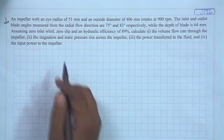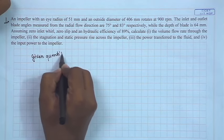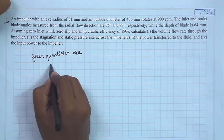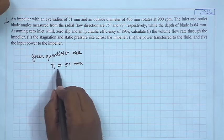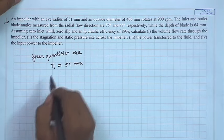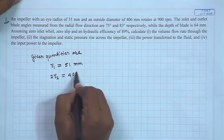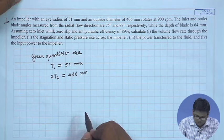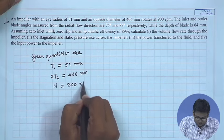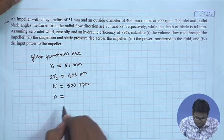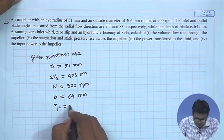Let us first note down the important given quantities. The eye radius r1 is 51 mm — the radius of the pump at the inlet. The outside diameter gives r2 = 406 mm, where r2 is the radius at the outlet of the pump impeller. Rotational speed n is 900 rpm. Width of the blade is 64 mm, and hydraulic efficiency is given as 89%.